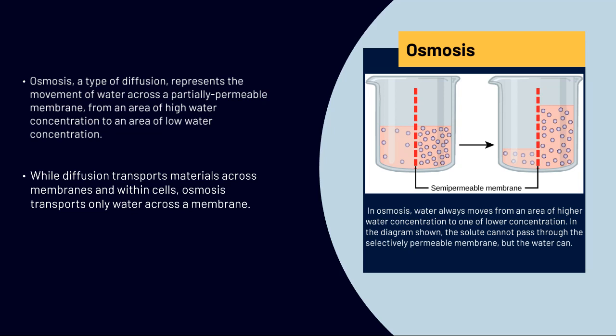So you can see in the jar on the right, the water moves to that right side of the semi-permeable membrane. And while diffusion transports materials across membranes and within cells, osmosis transports only water across the membrane.